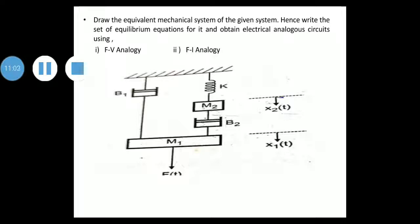We will now take a problem: Draw the equivalent mechanical system of the given system, write the set of equilibrium equations, and obtain electrical analogous circuits using FV analogy and FI analogy. The given system has mass M1, mass M2, spring of stiffness K, friction with coefficient B1, two displacements X1(t) and X2(t), and applied force F(t).